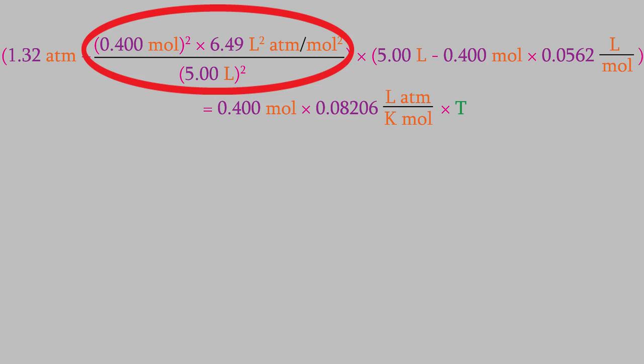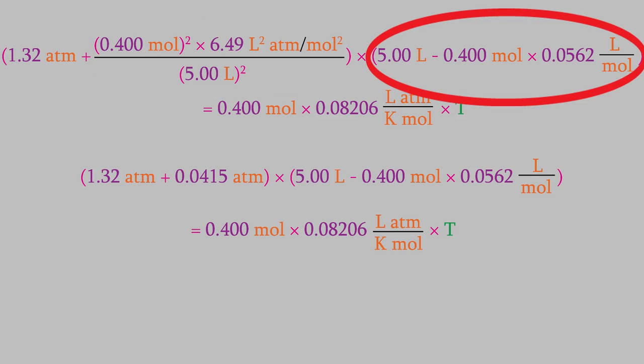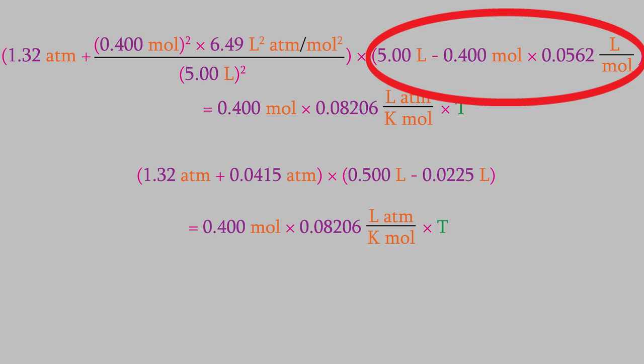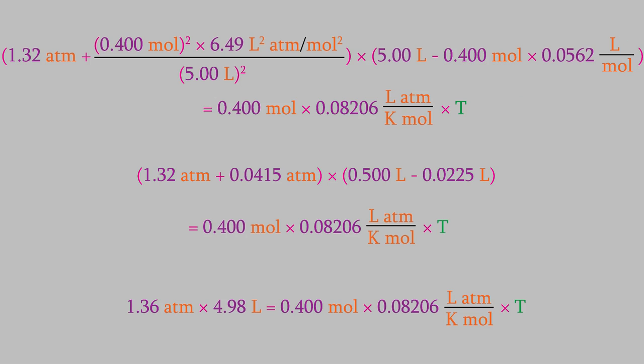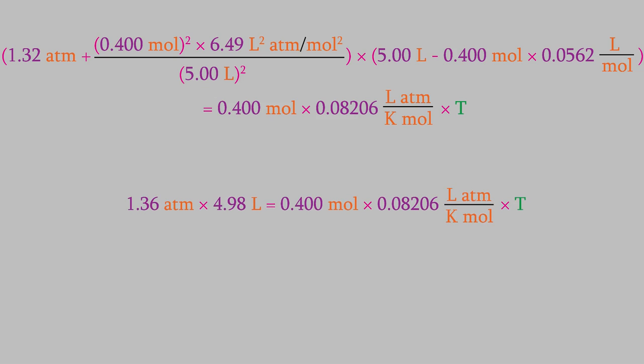First, let's solve the fraction in the first set of parentheses. That gives us 0.0415 atmospheres. Notice that the liters and moles in that fraction all canceled out. Next, let's solve this part. That gives us 0.0225 liters. So, the first parentheses gives us 1.36 atmospheres, and the second set of parentheses gives us 4.78 liters. Now that we've simplified the equation a bit, we can solve easily for T. When we do, we get 206 Kelvin.